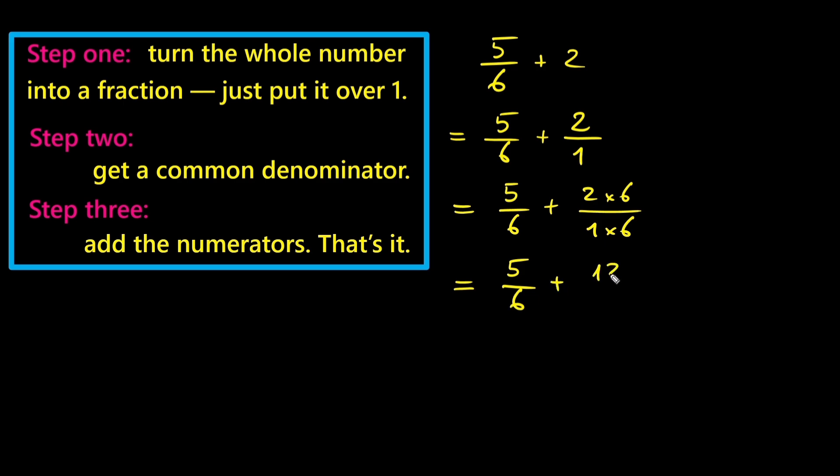So we have twelve over six. Now we can add five over six plus twelve over six gives us seventeen over six.